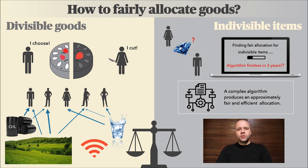Despite these two issues, we do not stop here. In my thesis we give an algorithm that always produces an allocation that is at least approximately fair, and this algorithm works for any number of players and any number of items. While this algorithm is theoretically fast, it is very complex, and we will keep looking for a more refined one in the future. Thank you.